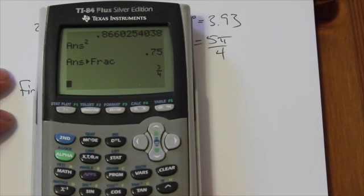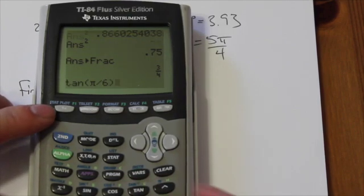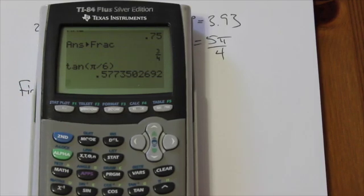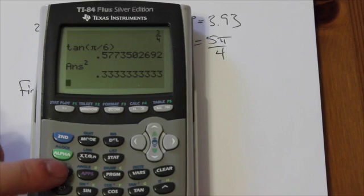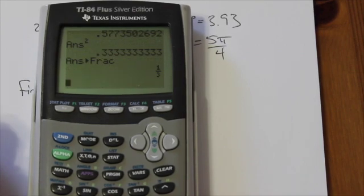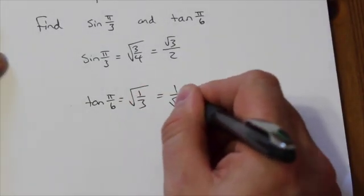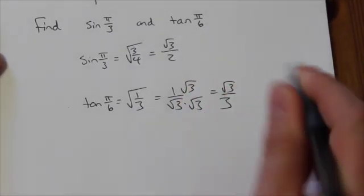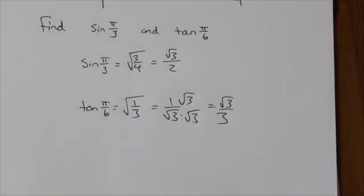We can do the same thing with the tangent of π over 6. Entering tangent of π divided by 6, I'm getting a strange decimal — anticipating a square root — so I square that result and get 0.33. Changing that to a fraction gives 1 third. Which tells me, putting the square root back in, there's a square root of 1 third, or 1 over root 3. If needed, I can rationalize this to get root 3 over 3. That's how you can use your calculator to both convert between radians and degrees and to put trig ratios into exact form.